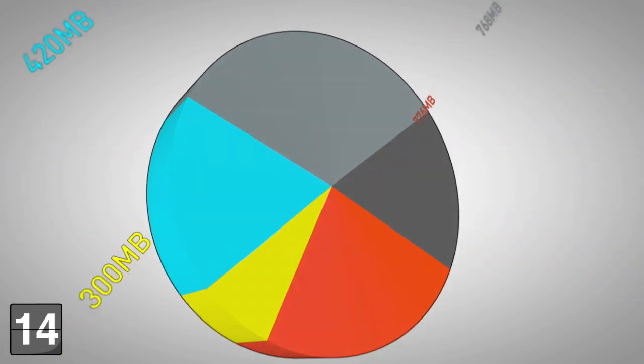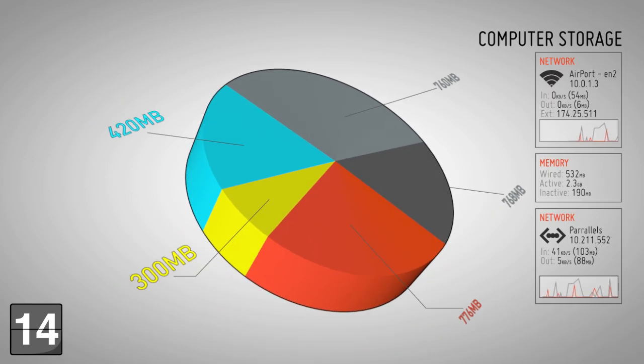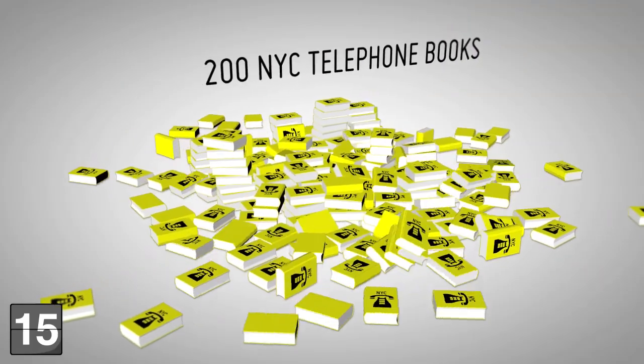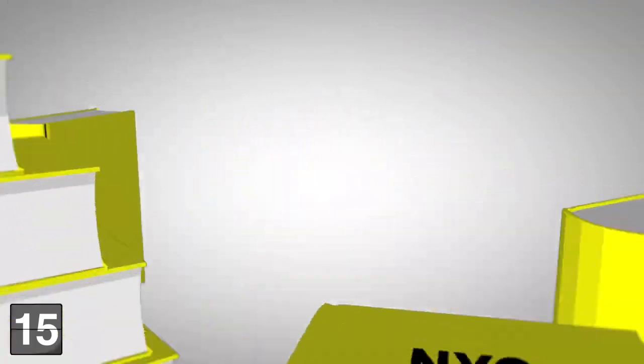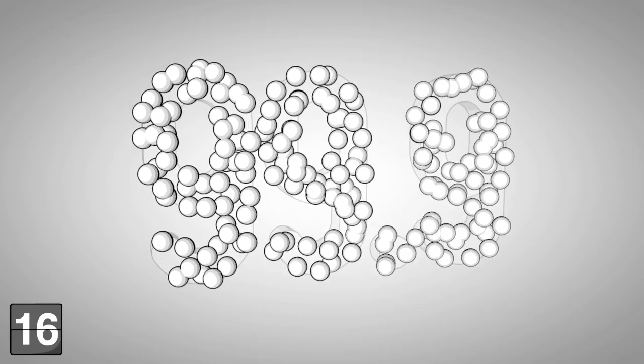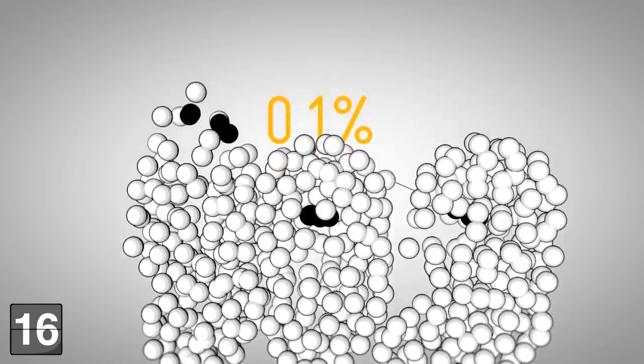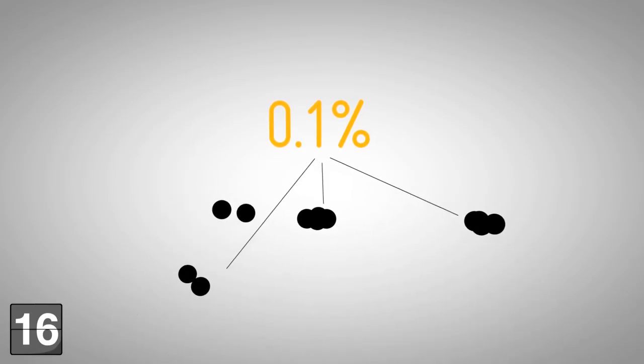All 3 billion bases of your genome would take 3 gigabytes of computer storage space. Your entire DNA sequence would fill 200 New York City telephone directories. You are 99.9% identical to the person next to you. Only 0.1% of our genetic makeup differs.